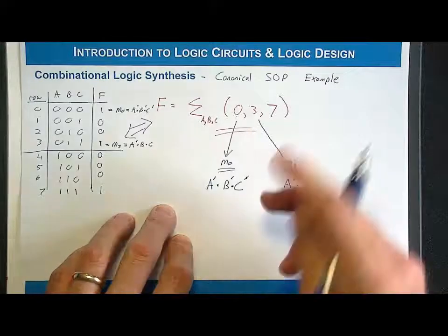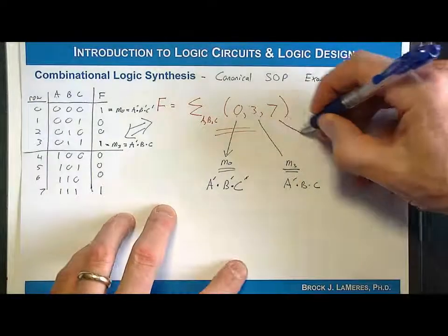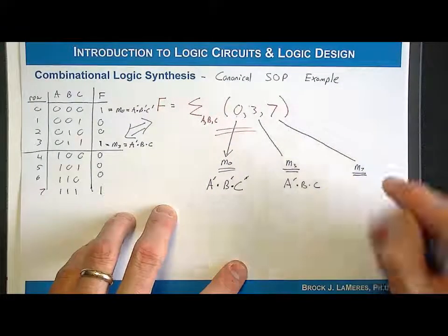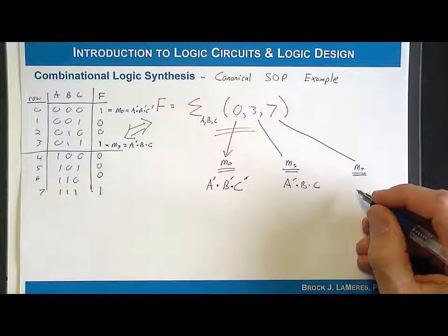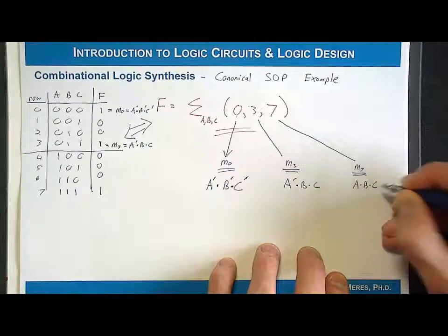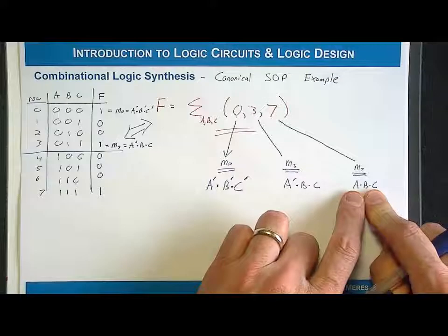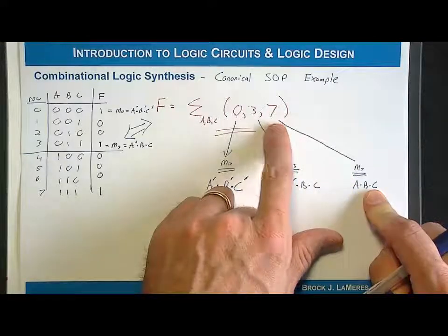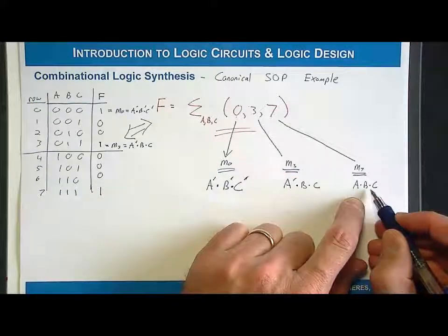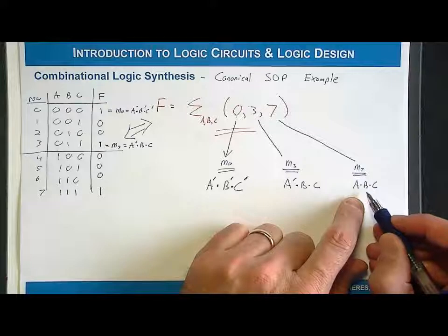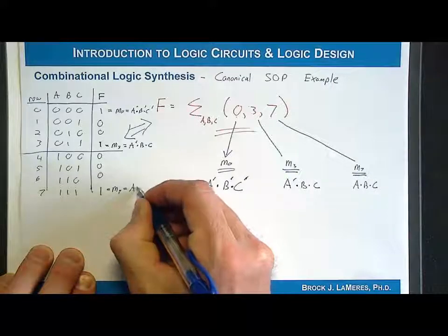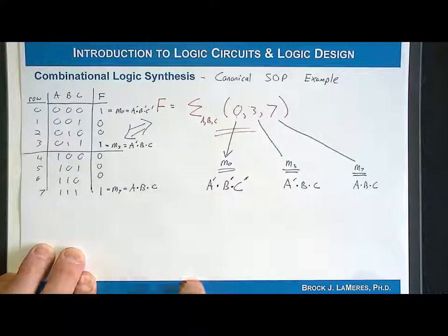Finally, we go to row 7 — let's do it from the minterm list this time. I have the minterm for row 7, which is a product term containing each variable in the system: A, B, and C. It needs to assert for one and only one input code. Row 7 is code 1, 1, 1 when you have three input variables, so I don't need any inversions. A, B, C will assert for 1, 1, 1 and only 1, 1, 1. So M7 = ABC.